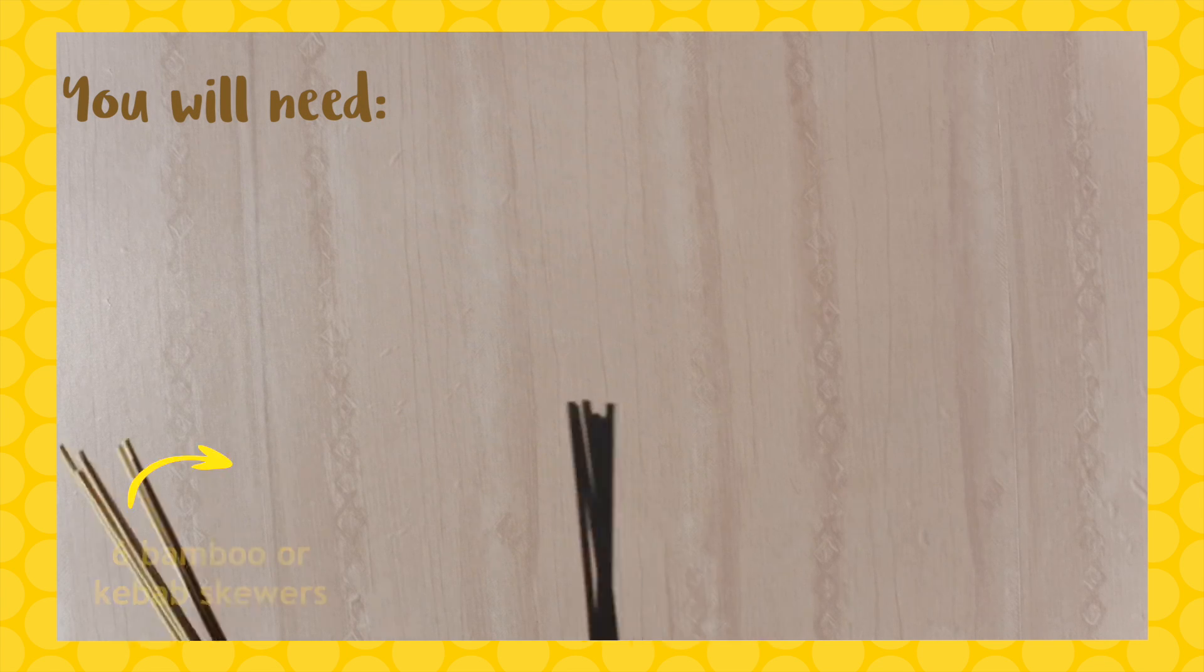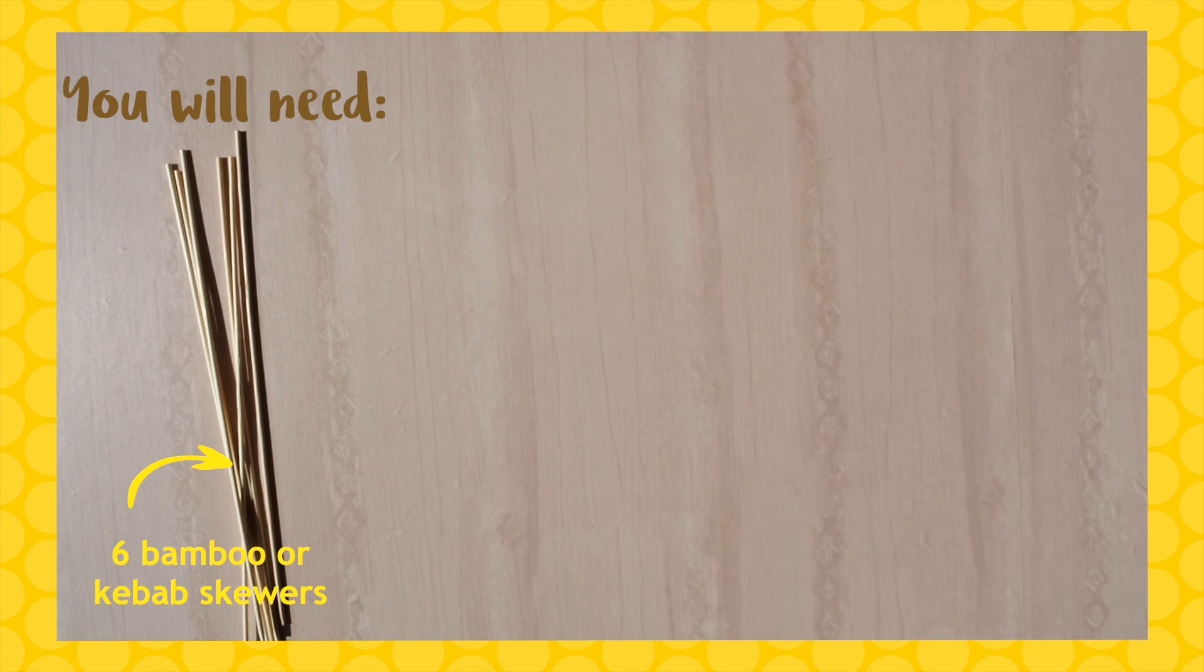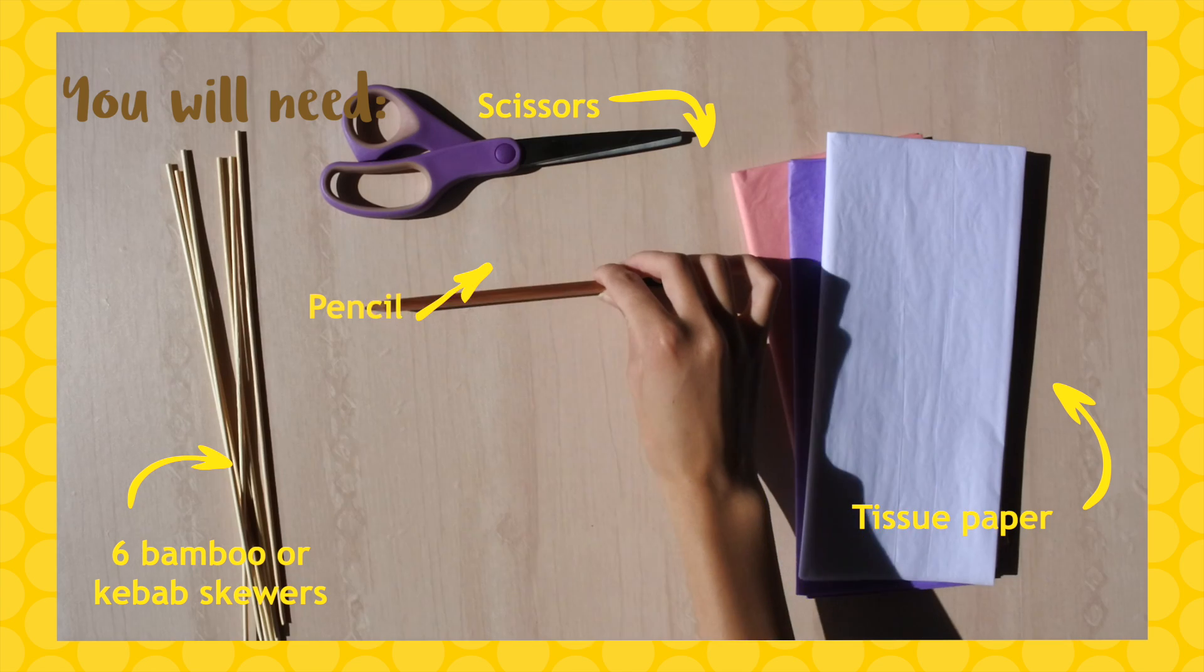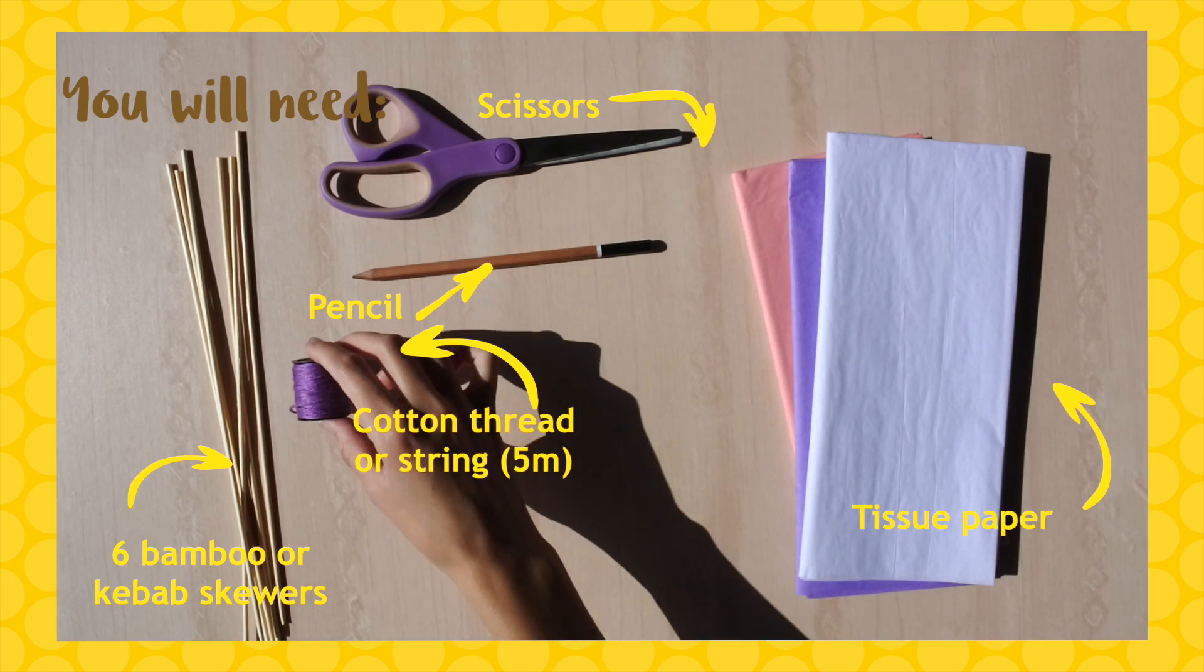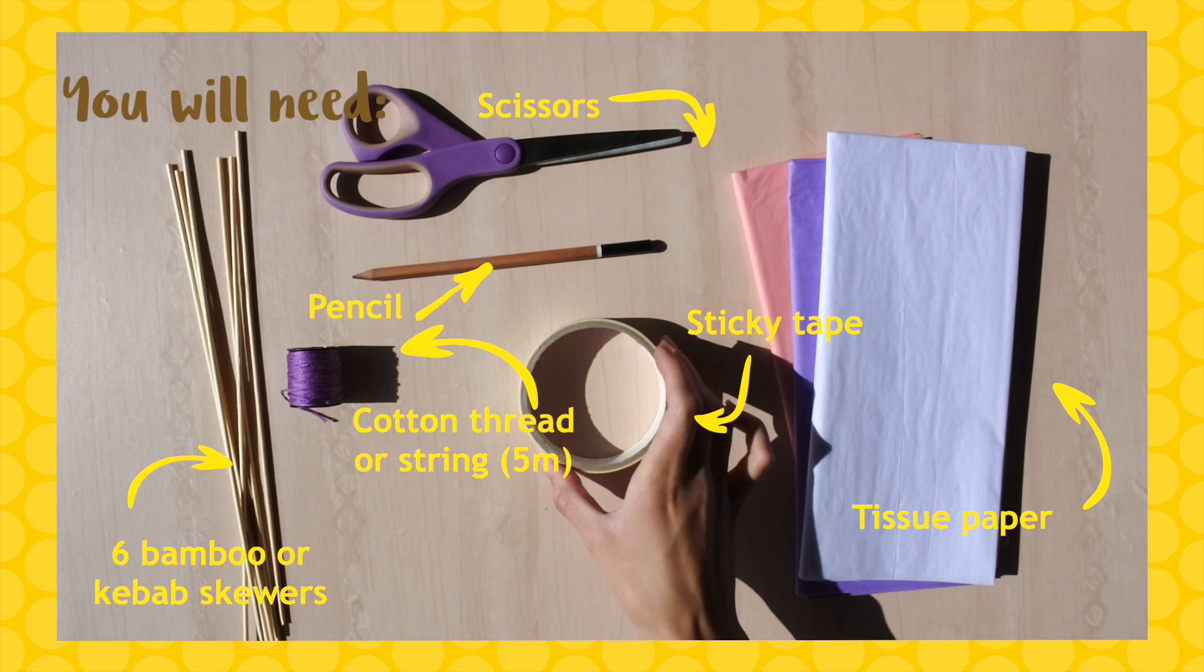It's kite making time. You will need 6 bamboo or kebab skewers, but make sure an adult has snipped the sharp ends off for you. Scissors, tissue paper, pencil, cotton thread or string 5m long, sticky tape, and glue.